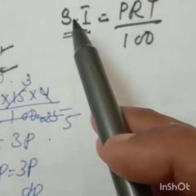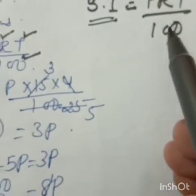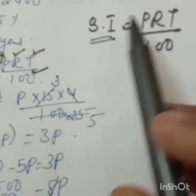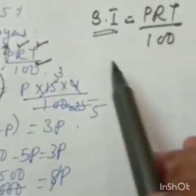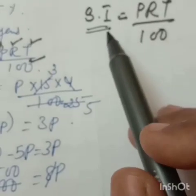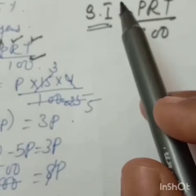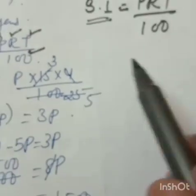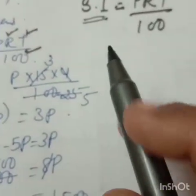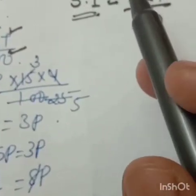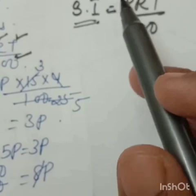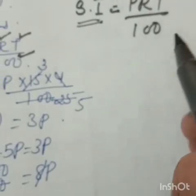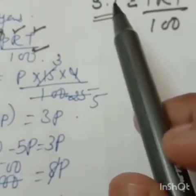The formula is simple interest equal to PRT by 100. As I explained in my last video, if more than one variable is unknown in a formula, you will not get the answer. You have to convert that formula so there is only one unknown and the rest of all variables should be known.